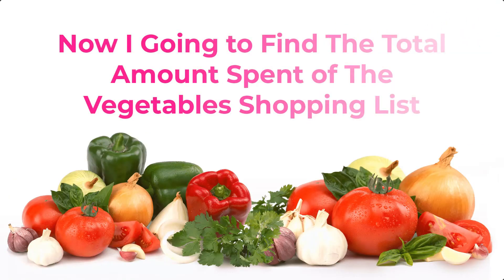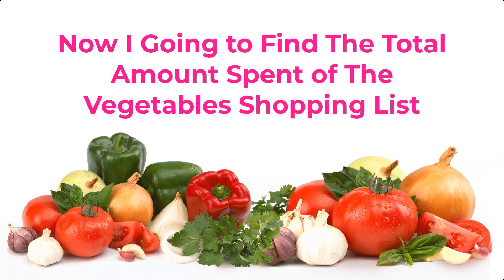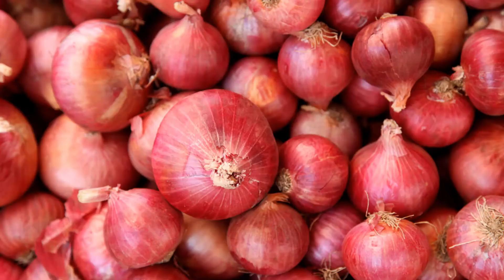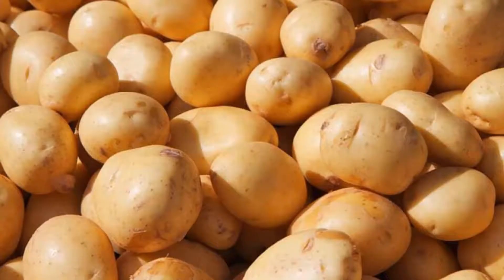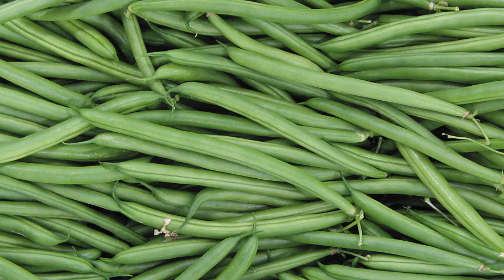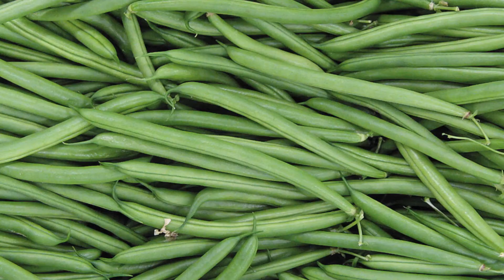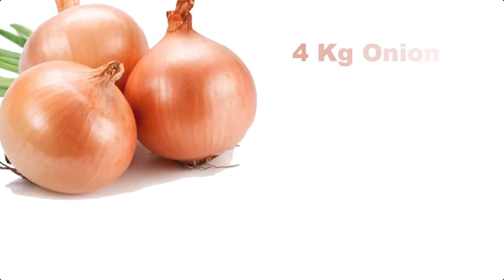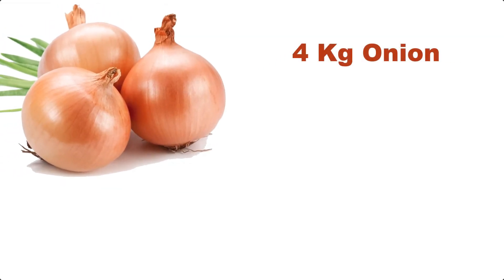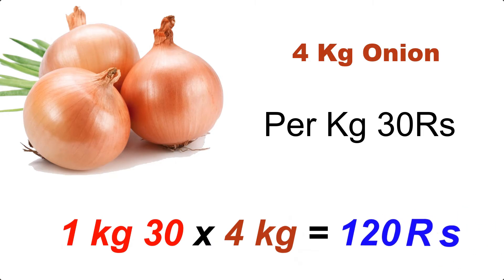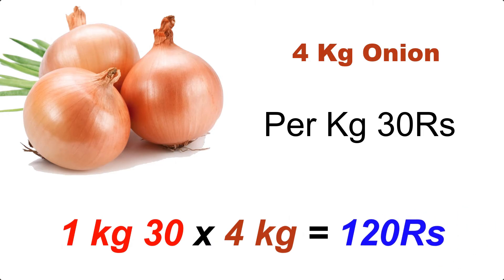Now I am going to find the total amount spent on the vegetable shopping list: 4 kg onion, 3 kg tomato, 2 kg potato, 2 kg carrot, 1 kg beans, 1 and a half kg beetroot. 4 kg onion at 30 rupees per kg: 30 multiplied by 4 equals 120 rupees.